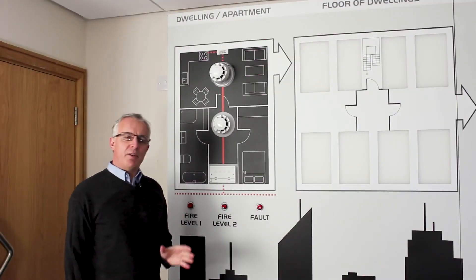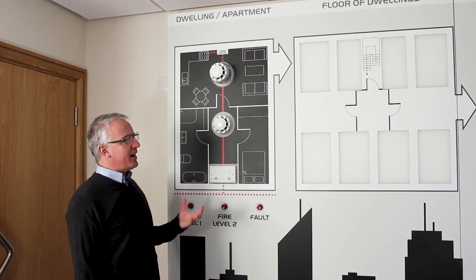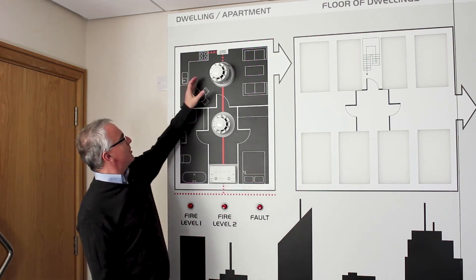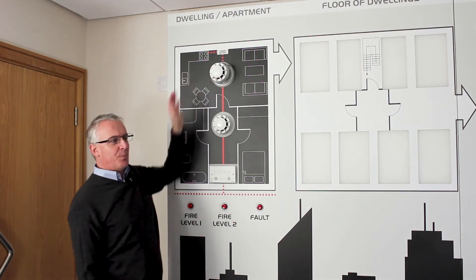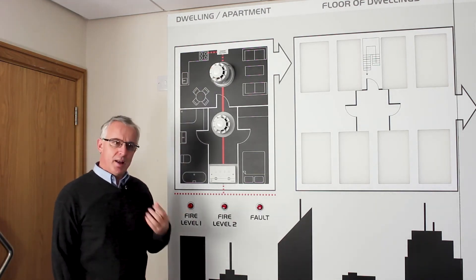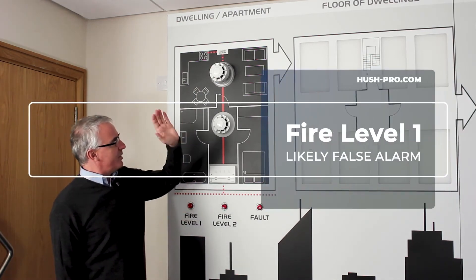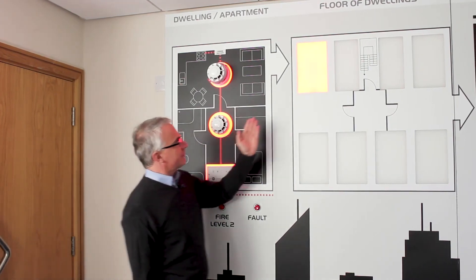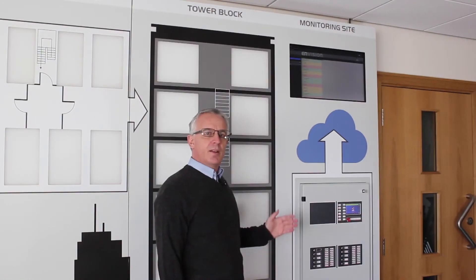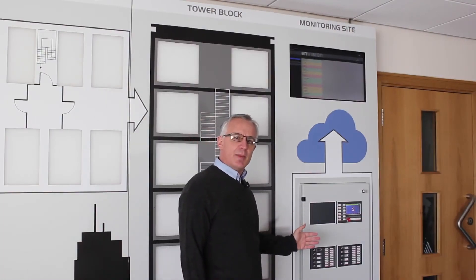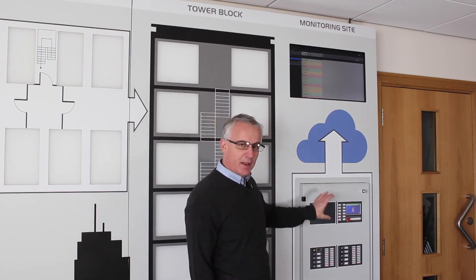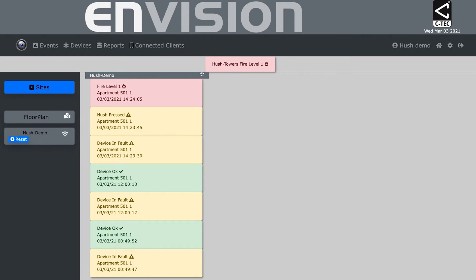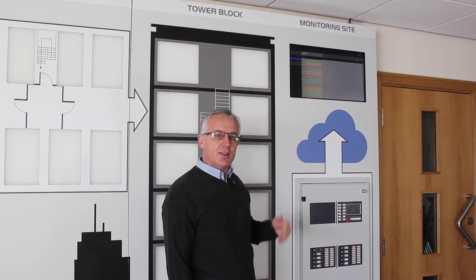With Hush Pro we have also got the fire level 1 and fire level 2 alarm scenarios. Now fire level 1 as we discussed before is potentially a false alarm. Maybe the toast has been burnt in the kitchen and the optical element of the multi-sensor in the open plan lounge area has picked that up. That will flag a fire level 1 alarm which will be reported on this particular dwelling on this particular floor. Okay as fire level 1 is typically and likely to be an unwanted or false alarm it isn't reported on the ZFP's panel display although it is logged at the panel but it is reported off-site via the cloud-based monitoring software. Once the false alarm, if it is a false alarm has been cleared the system will reset as normal.